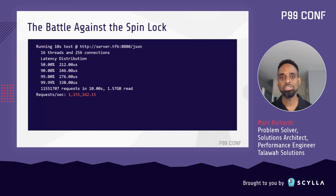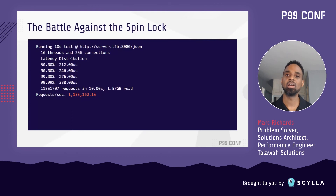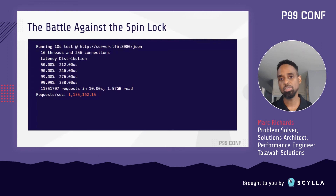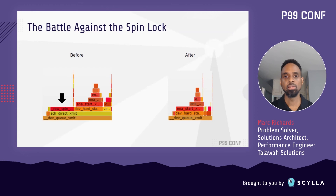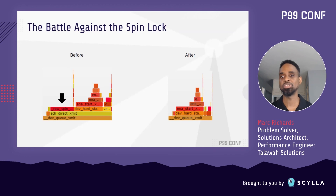We're going to skip over the spin lock story and jump to the results. Defeating the spin lock gives us a somewhat underwhelming performance boost of just over 2%. Throughput moves from 1.12 million requests per second to 1.15 million requests per second. One might think there should have been a bigger performance boost from such a significant flame graph change, but that's a story for another day.